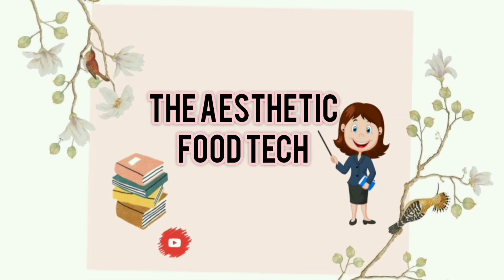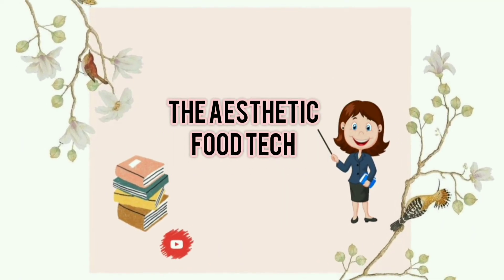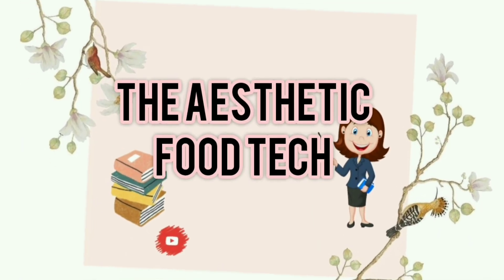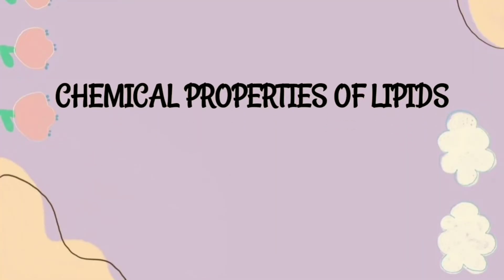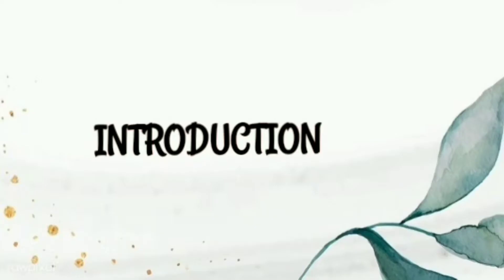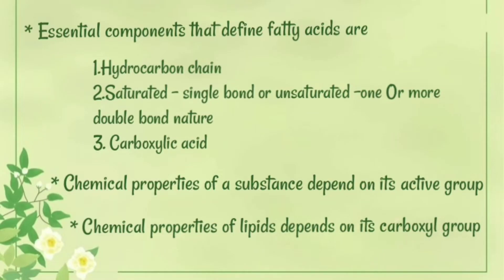Hello everyone, welcome to Aesthetic Food Tech. In this video I am going to discuss the chemical properties of lipids. Fats are composed of fatty acids, and there are certain essential components that define a fatty acid: first, the hydrocarbon chain; second, the saturated or unsaturated nature — saturated means the presence of single bonds and unsaturated means the presence of double bonds.